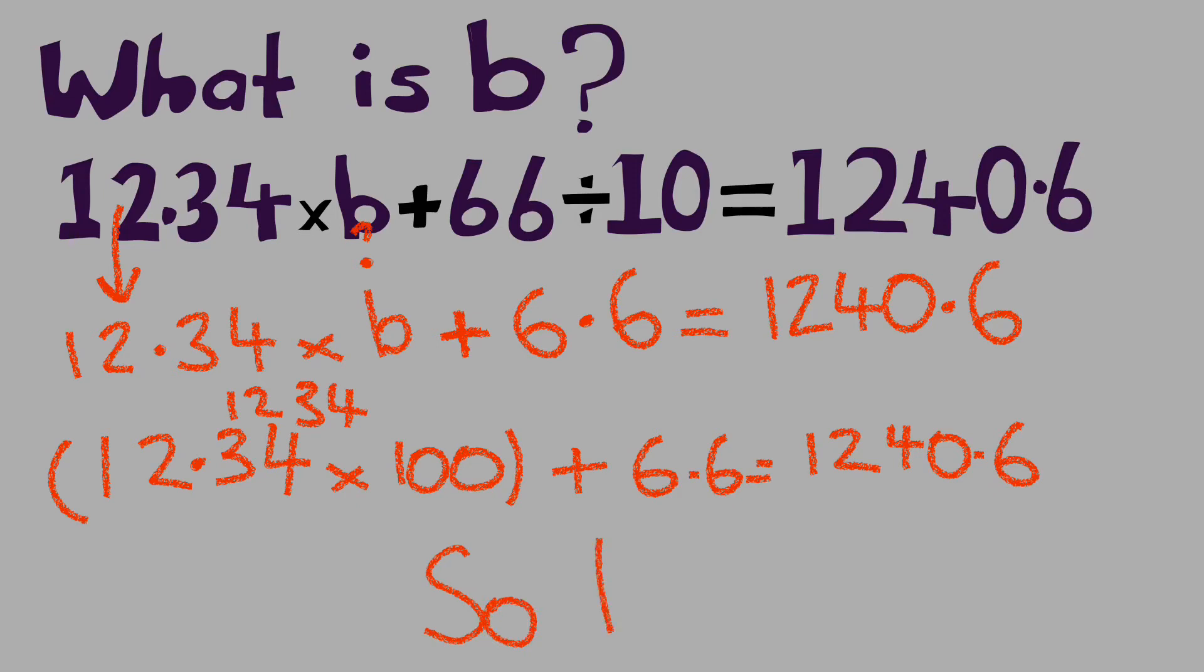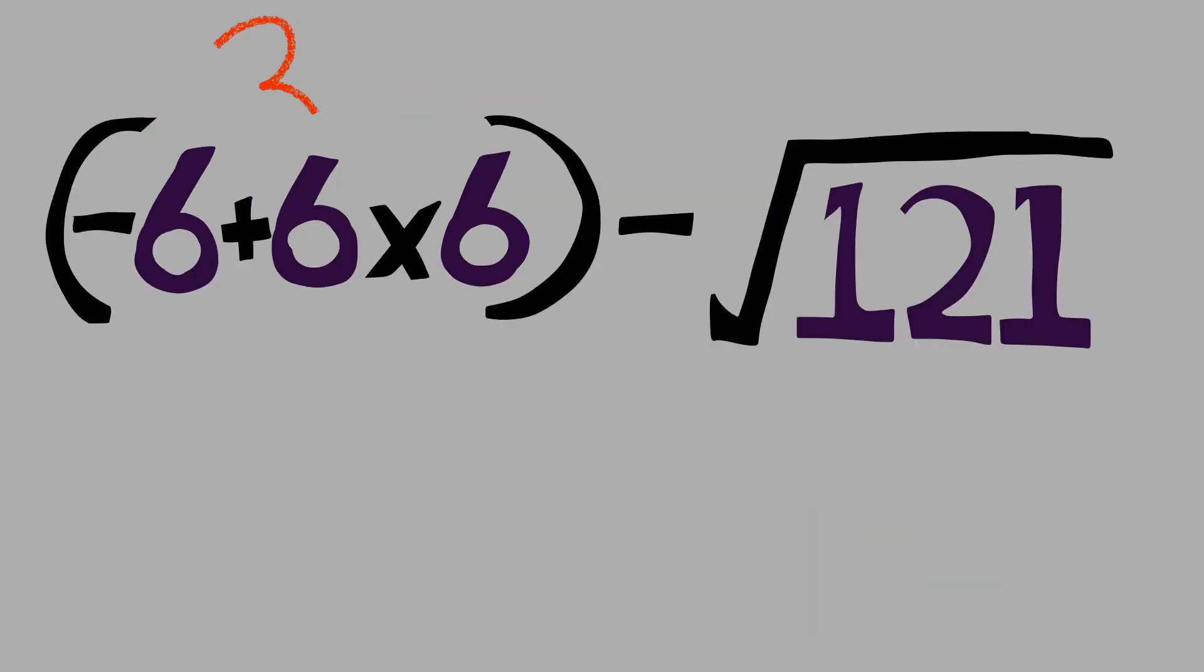Negative 6 plus 6 times 6: 36. So negative 6 plus 36 is going to be 30. We subtract that from the square root of 121. The square root of 121, well that's 11. 30 take away 11, that's going to leave you with 19.